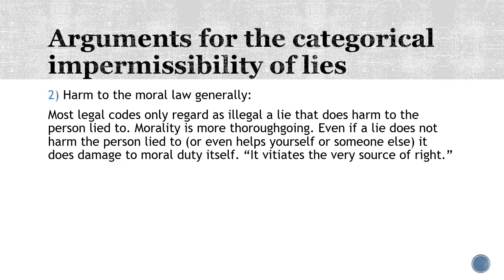The second justification Kant offers for telling the truth is that lies do harm to the moral law generally. Most legal codes only regard as illegal a lie that harms the person lied to. But morality is much more thoroughgoing than the law. Even if a lie does not harm the person lied to, or even if it helps yourself or somebody else, it does damage to moral duty itself. In Kant's words, it vitiates the very source of rightness — which sounds almost mystical, but really means something like damage to the fabric of society.